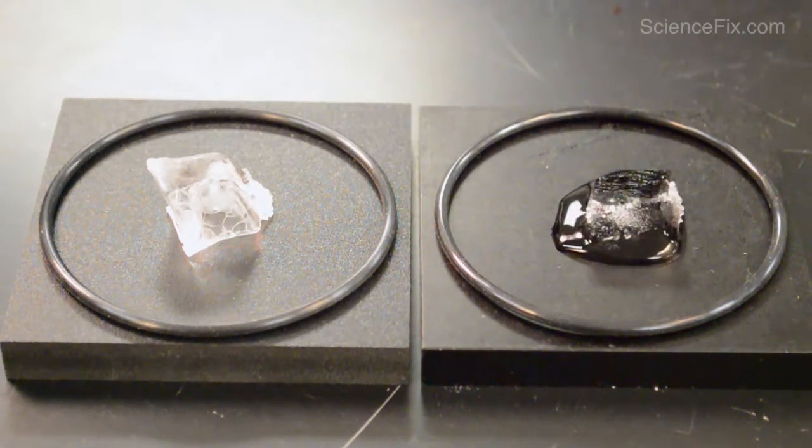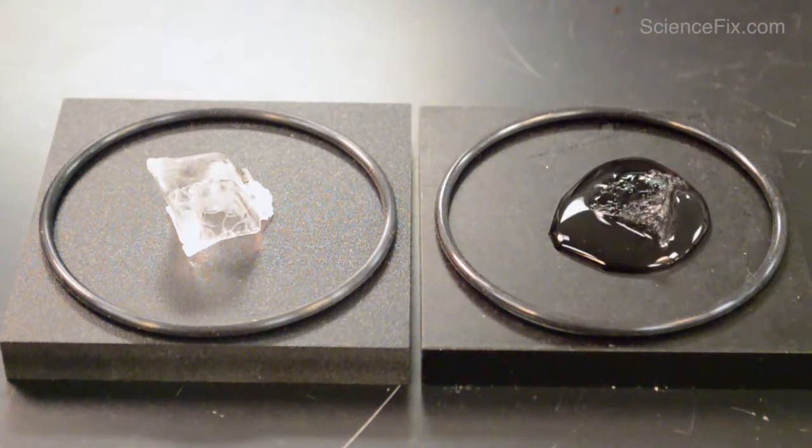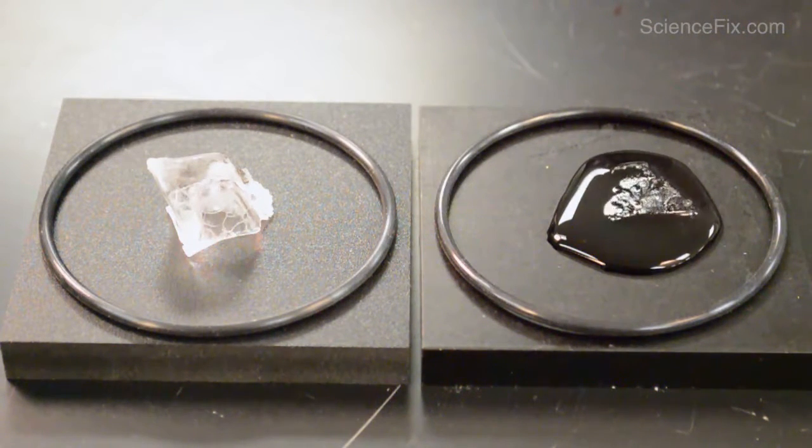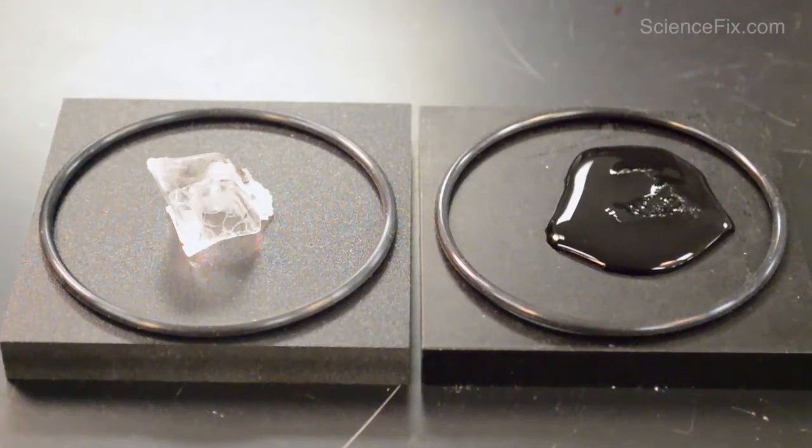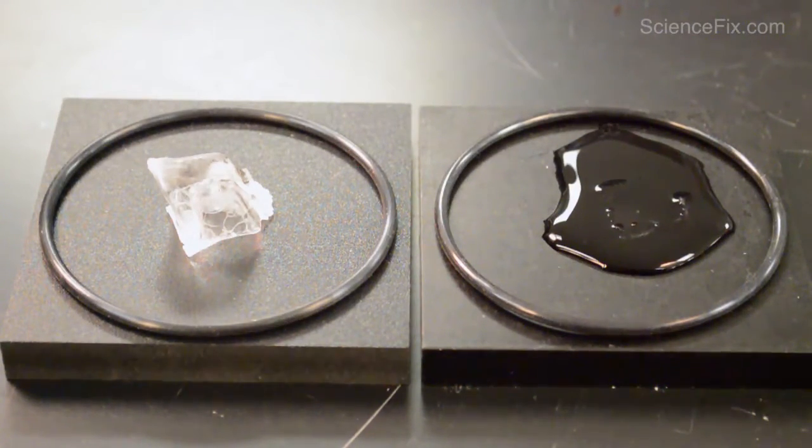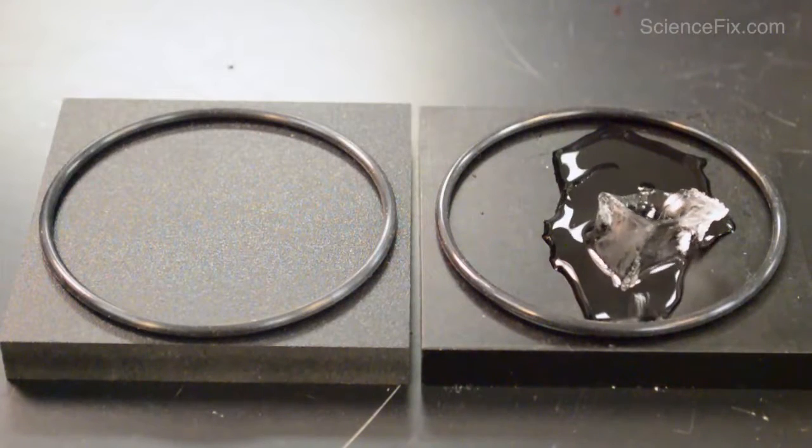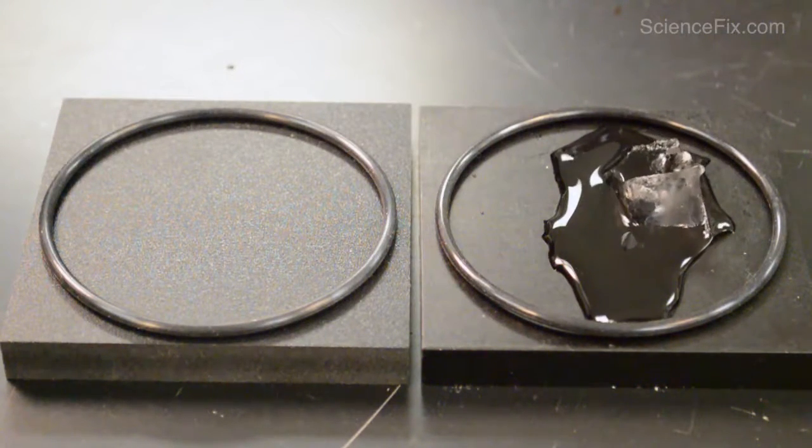And this is counterintuitive to a lot of students. They think the one on the right block should feel much hotter than the one on the left—that's why the ice cube melted. And this is a very good first step to introduce heat energy to students.